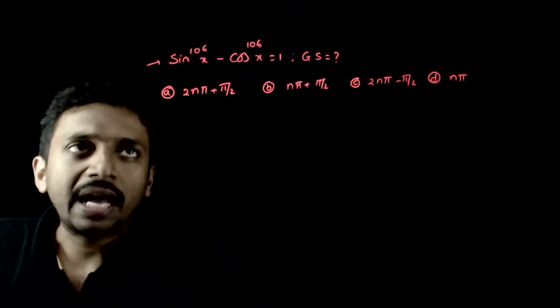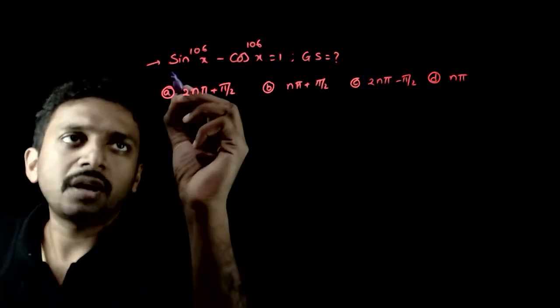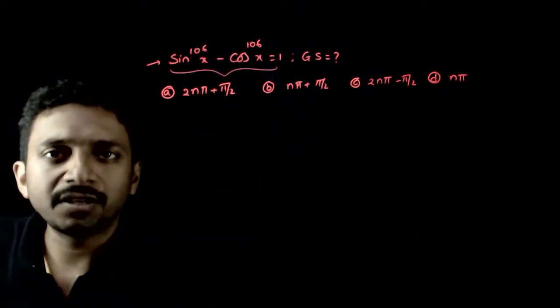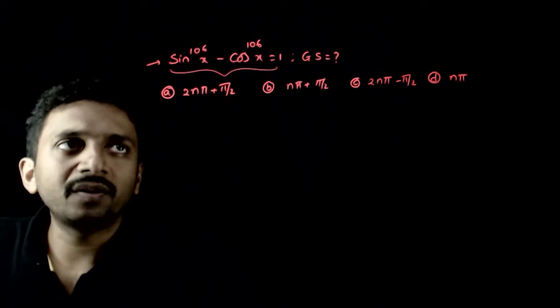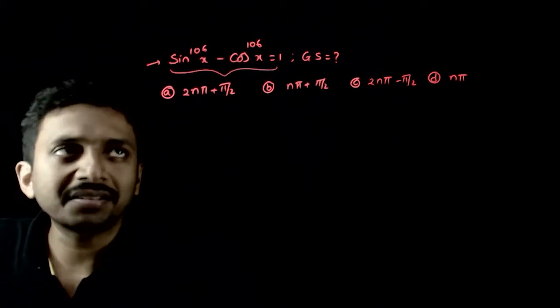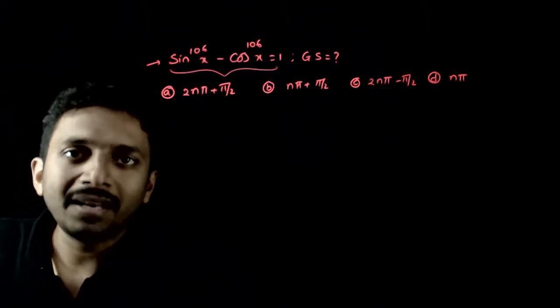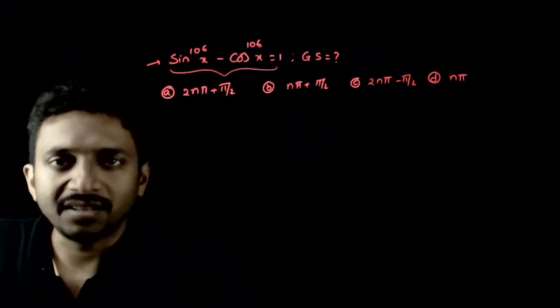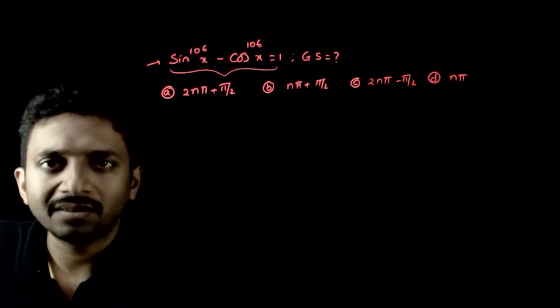In this question, you are asked to find the general solution of sin power 106x minus cos power 106x is equal to 1.